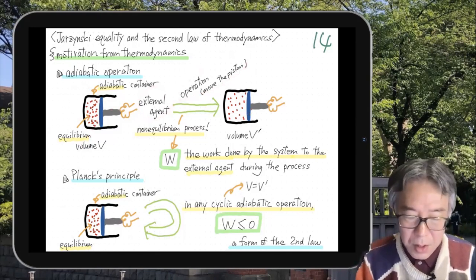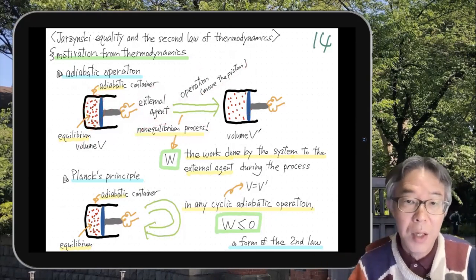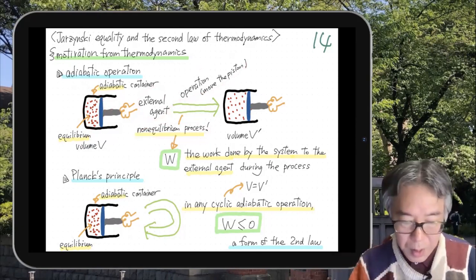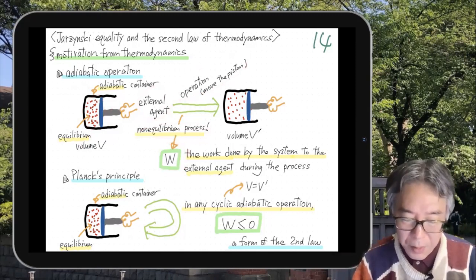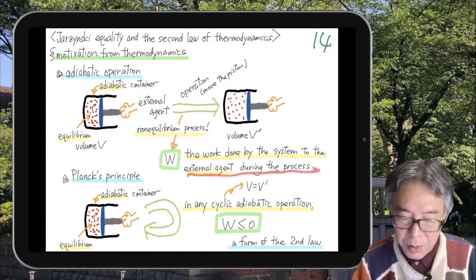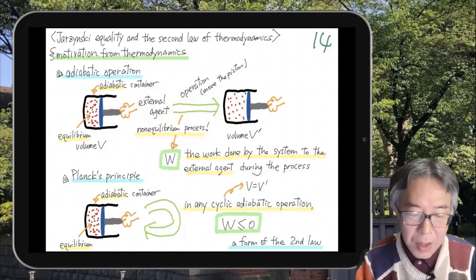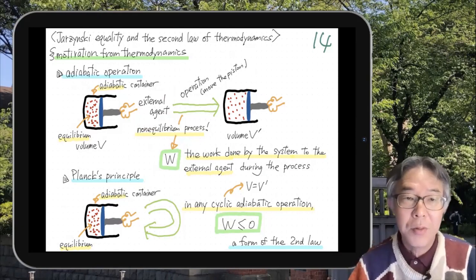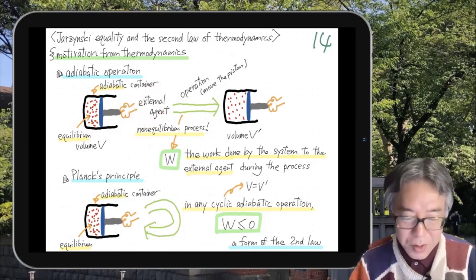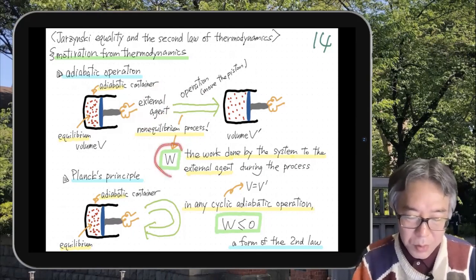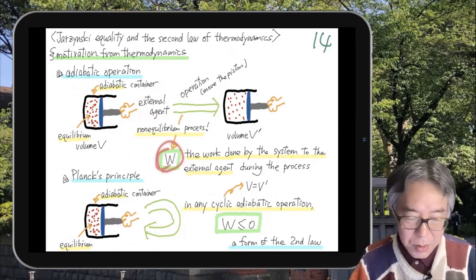Usually even if you start from equilibrium, you go through a non-equilibrium process if you move the piston. The quantity we are interested in is W, which is the work done by the system to the external agent during this process. The external agent is a mechanical entity that can measure the force and compute the work that the system performed to the outside world. So this is our central quantity.